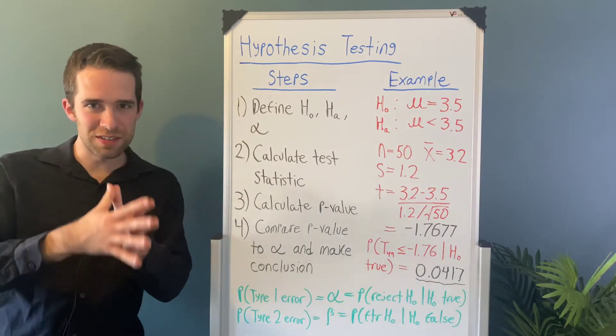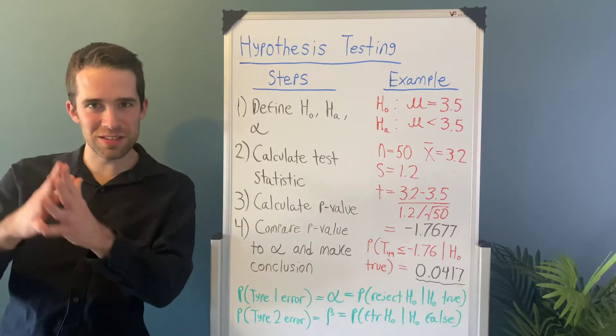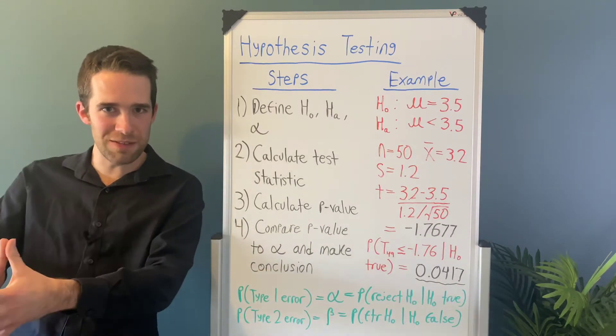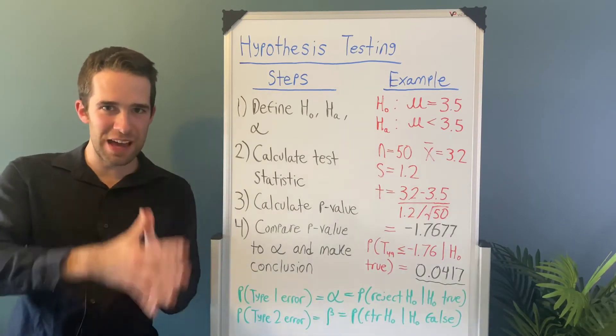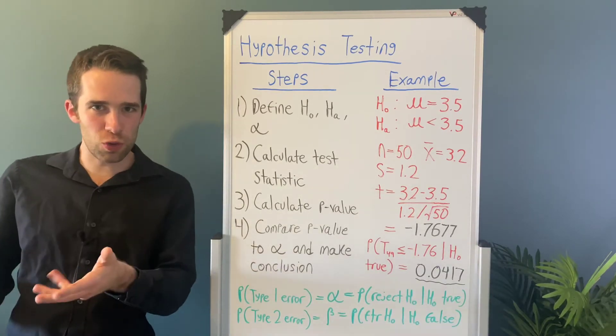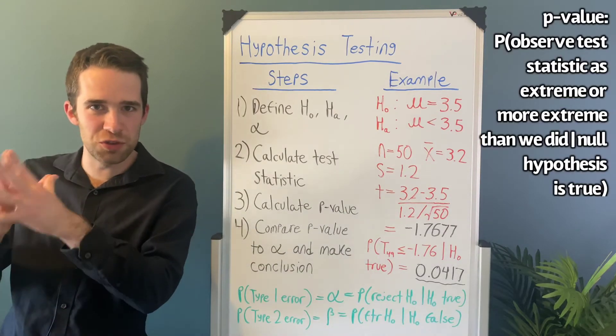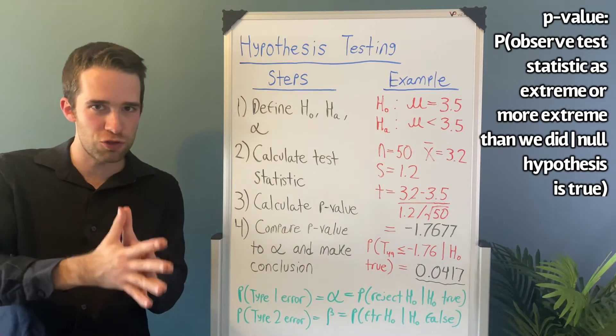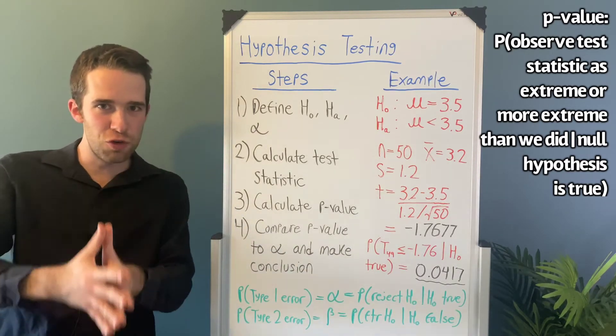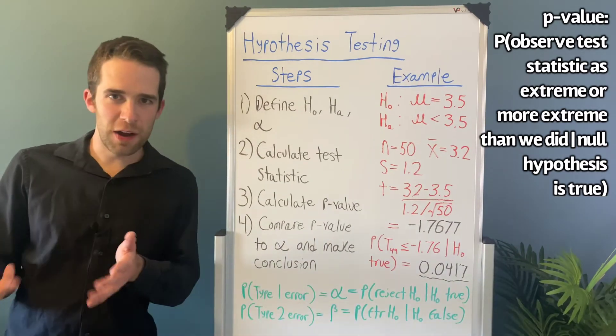Which is where you use the distribution of that test statistic to calculate what's called a p-value. And now I'm going to have a whole video on what a p-value is and is not. But the short definition of it is that a p-value is the probability you observe a test statistic as extreme or more extreme than you did, assuming the null hypothesis is in fact true.